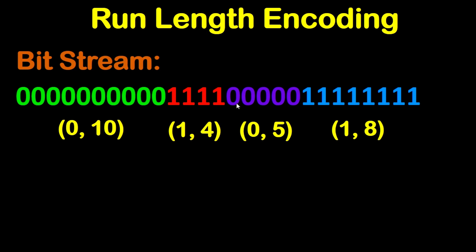Now for this group we have a group of zeros, so we will write zeros. We have 1, 2, 3, 4, 5 zeros. Then a group of ones, so I will write 1. Then 1, 2, 3, 4, 5, 6, 7, 8 — so I will write 8 like this.